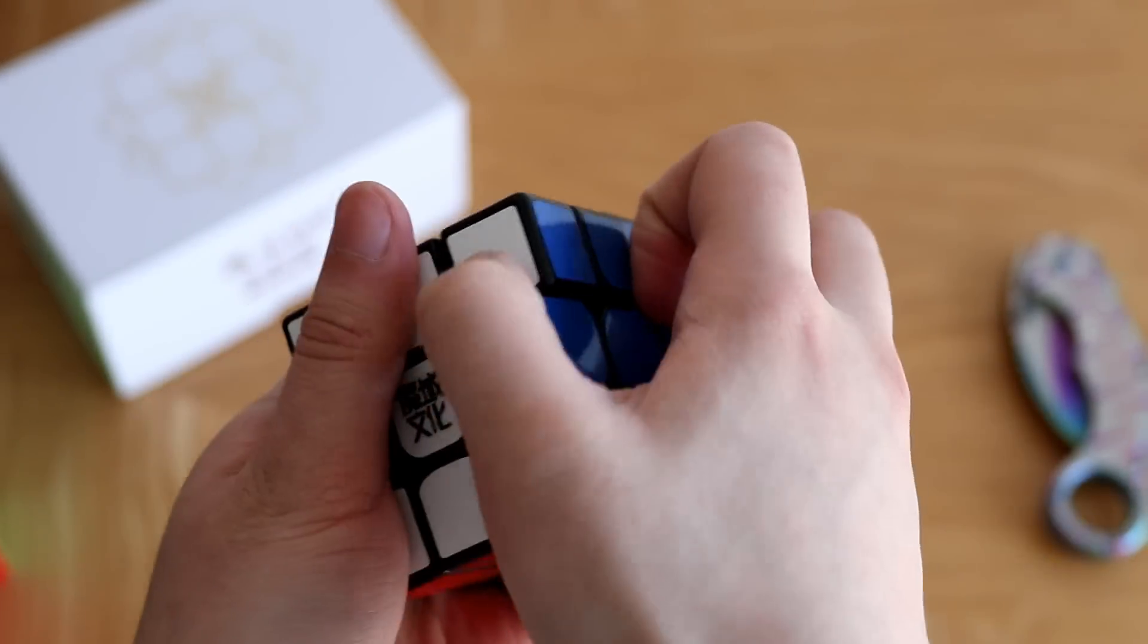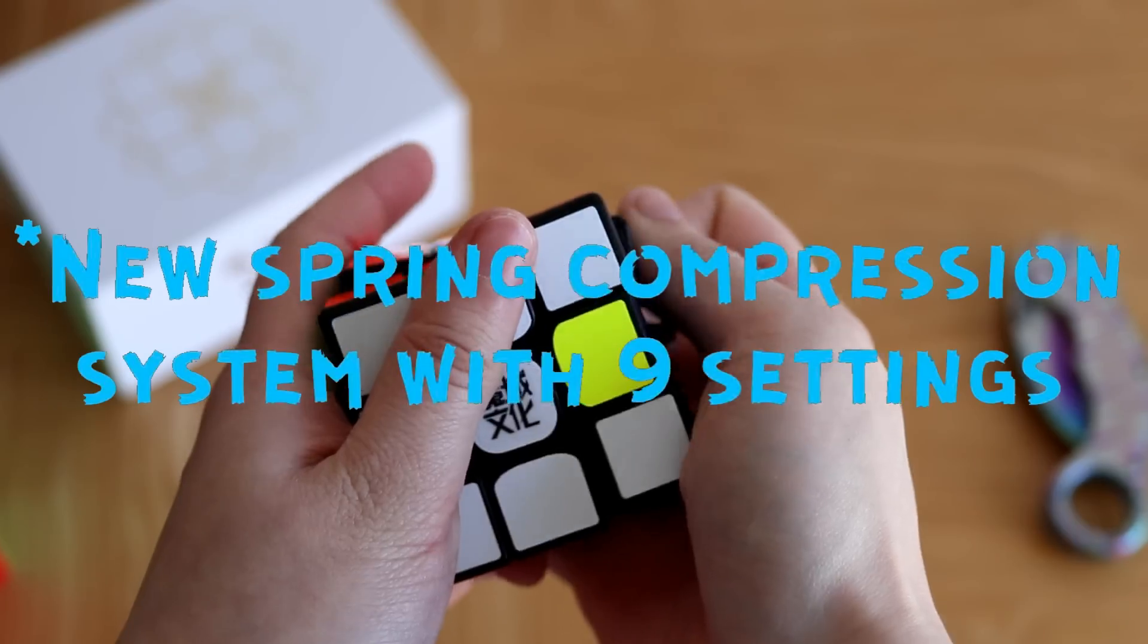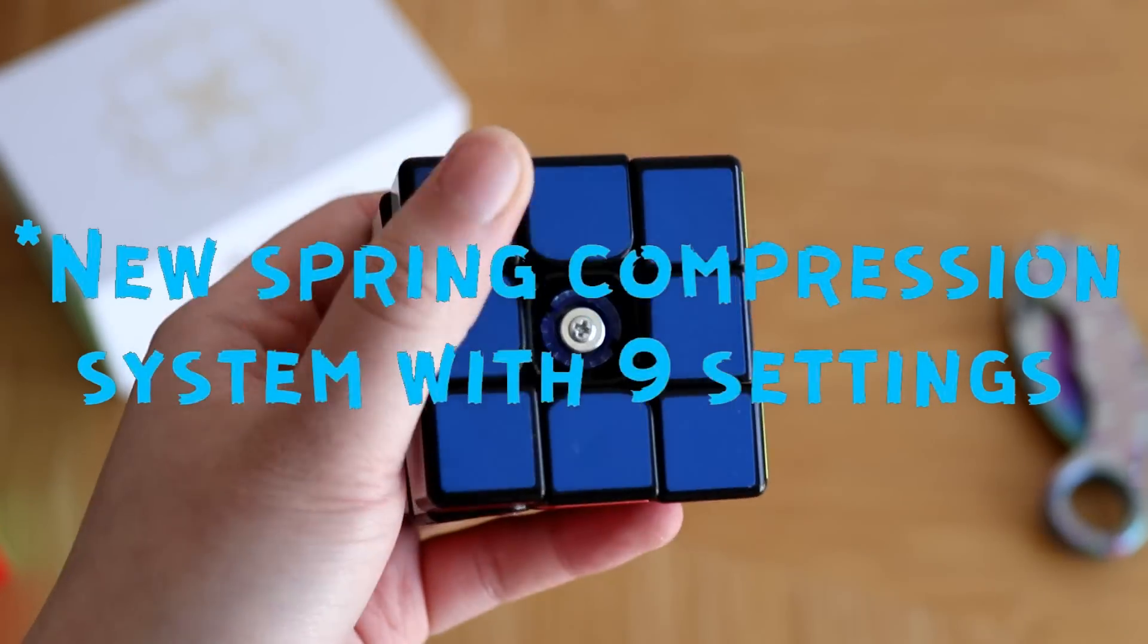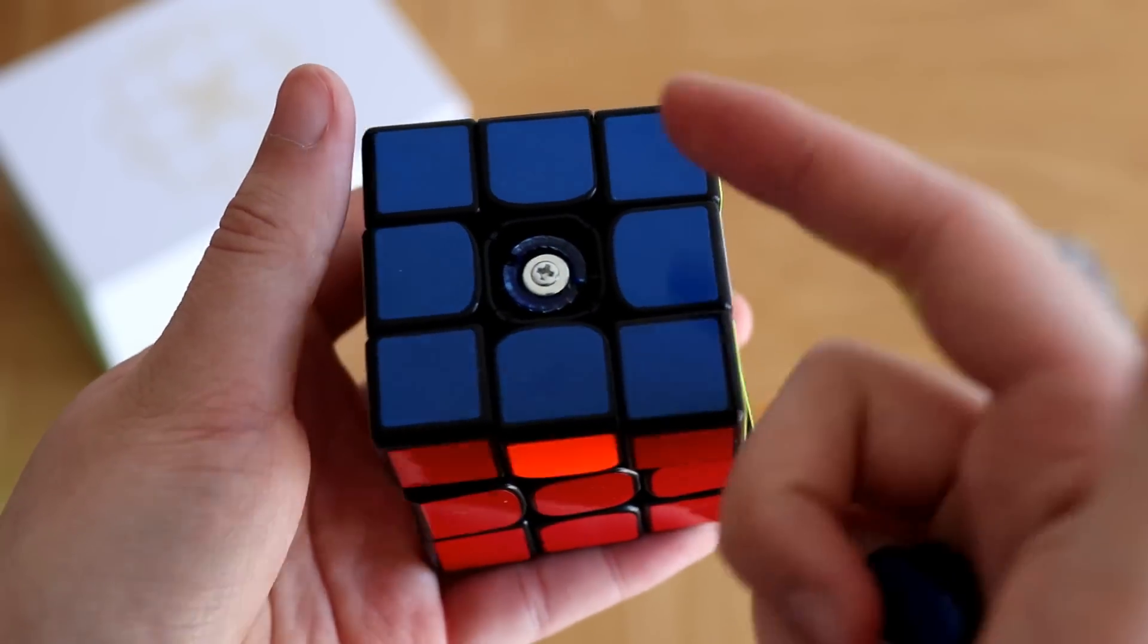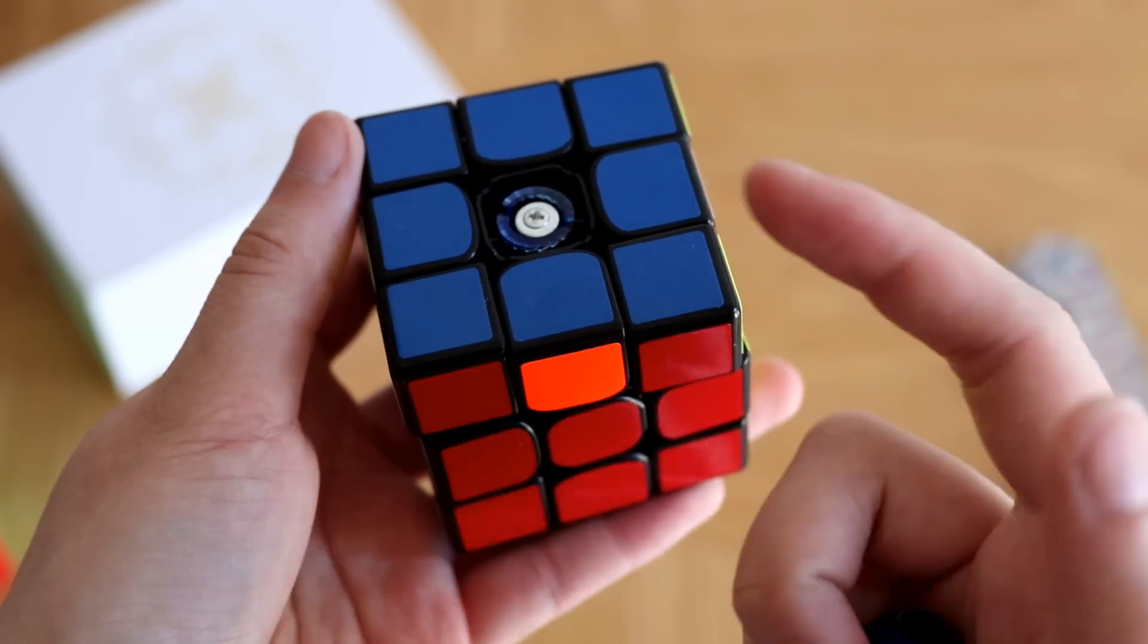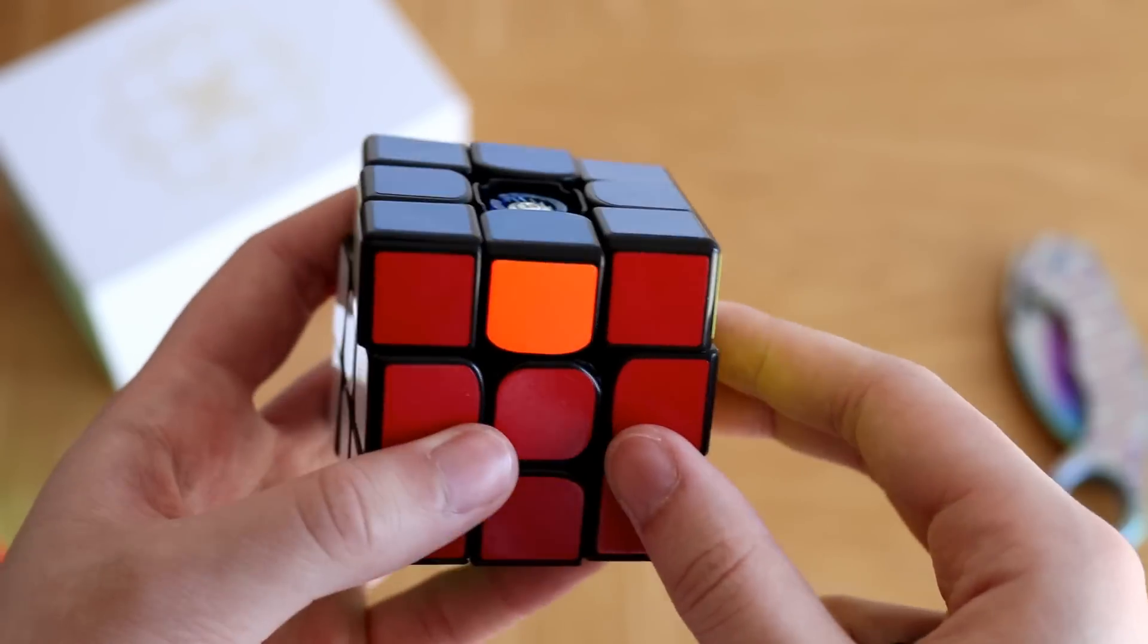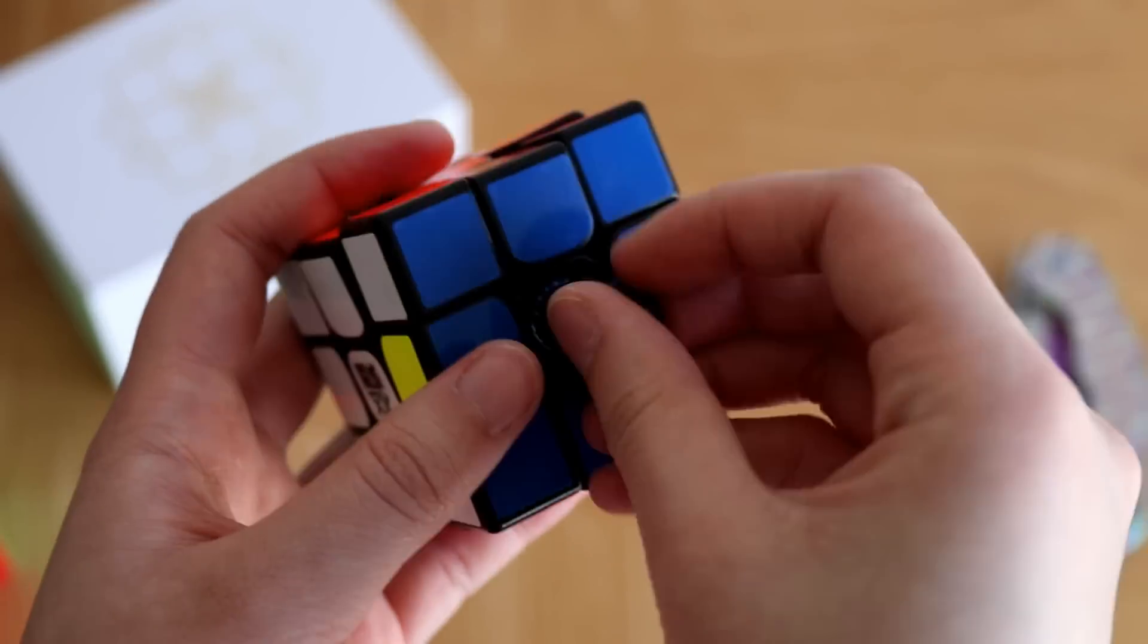And I really love that the GTS3 and the WR it has this new spring adjustment system. So these ridges you can just turn it and it gives the cube a little bit more of a different spring tension. Just a different feeling and you do have a lot of customization with this cube.